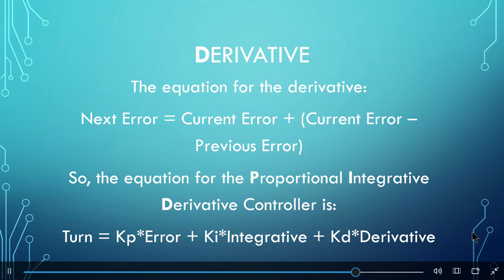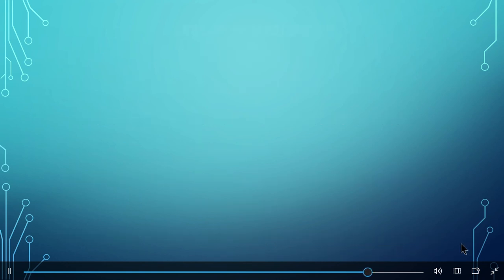This is the complete equation for the PID controller: turn equals kp times error plus ki times integral plus kd times derivative. The pseudocode is shown on the screen.